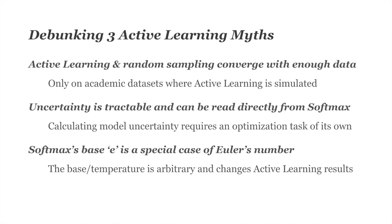The second myth is that uncertainty is tractable and can be read directly from softmax. I've seen people as prominent as Yann LeCun claiming this recently, and it simply isn't the case. For a binary classification task you can read confidence directly from softmax, but anything more complicated means there are multiple ways of calculating uncertainty and no one way is guaranteed to be optimal. Calculating optimal uncertainty for anything beyond a binary task is an optimization problem in its own right — many advanced uncertainty sampling methods are themselves machine learning algorithms.